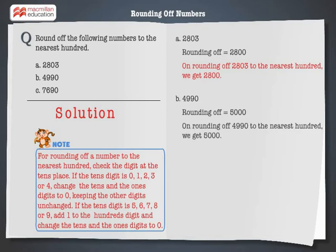Hence, on rounding off 4,990 to the nearest hundred, we get 5,000.